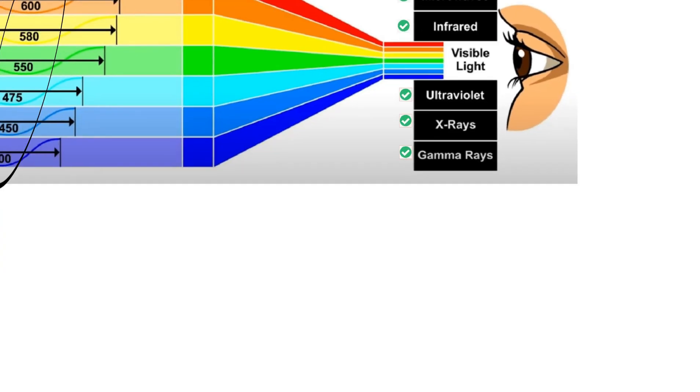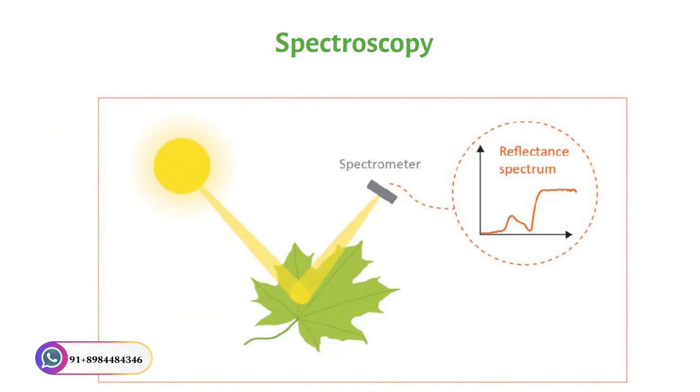Spectroscopy. The behavior of light when it falls on an object is studied through spectroscopy. The sensors used in spectroscopy are called spectral sensors or spectrometer.